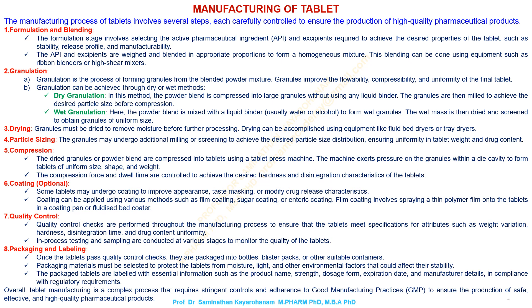Dry granulation. In this method, the powder blend is compressed into large granules without using any liquid binder. The granules are then milled to achieve the desired particle size before compression.